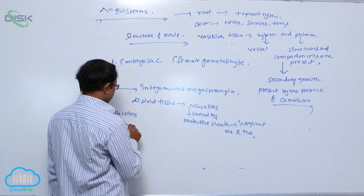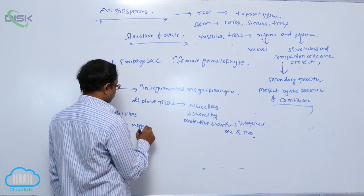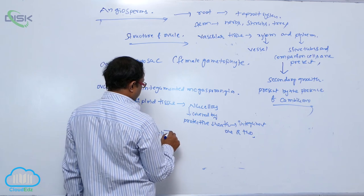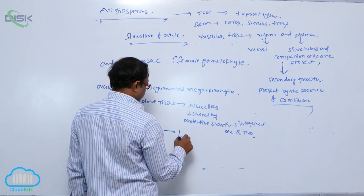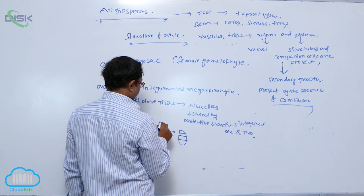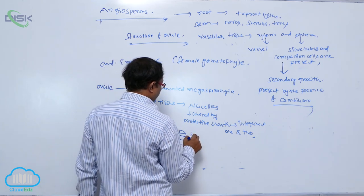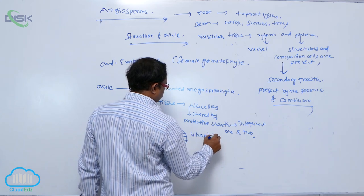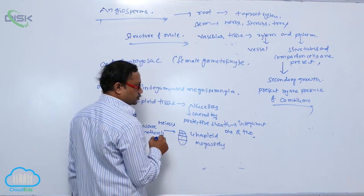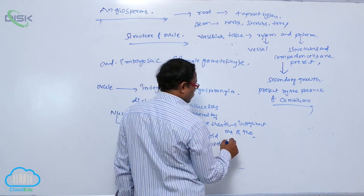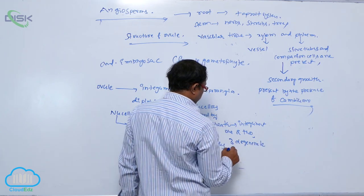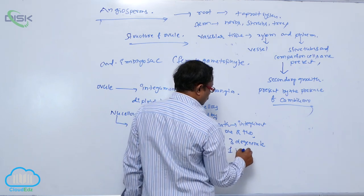Inside the nucellus, one cell is considered as the megaspore mother cell. The megaspore mother cell undergoes meiotic division, producing four haploid megaspores. Out of these four haploid megaspores, three degenerate and one is functional.